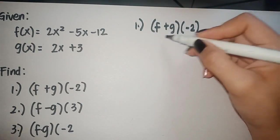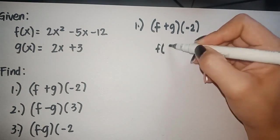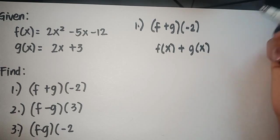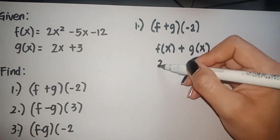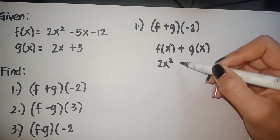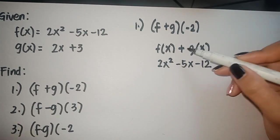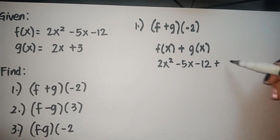The first value of x is negative 2. On the last part, we have to substitute negative 2 in every variable x. So substitute f of x, that is 2x squared minus 5x minus 12, plus our g of x equals 2x plus 3.